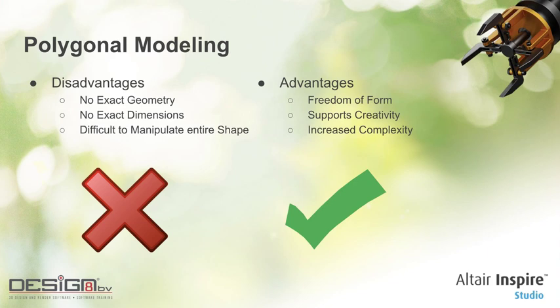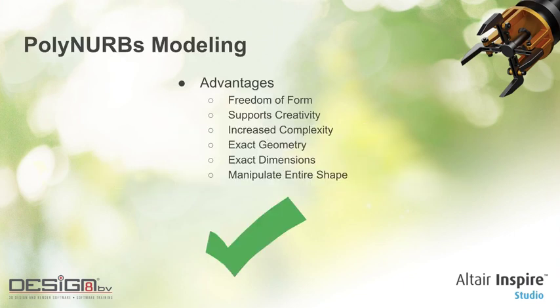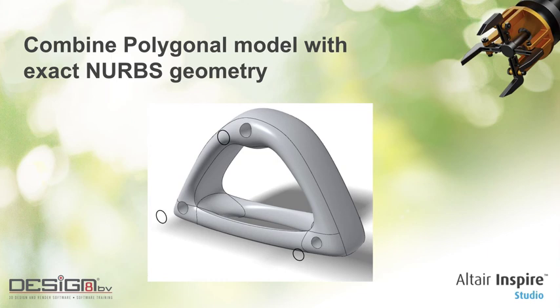Since both methods have their disadvantages and advantages, we introduce PolyNURBS — the best of both. You have freedom of form, your creativity is fully supported, you can have increased complexity, but you can also have exact geometry, introduce exact dimensions, and it is easier to manipulate the entire shape. With PolyNURBS modeling you combine a polygonal model with exact NURBS geometry. So enough about this — let's see how it works in practice.